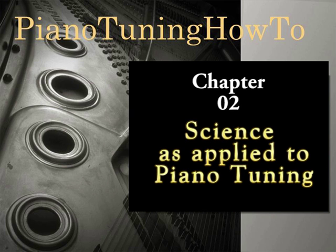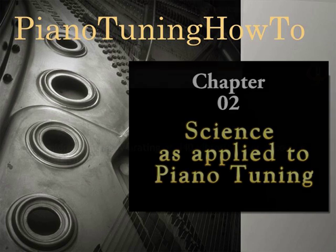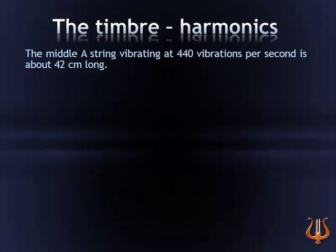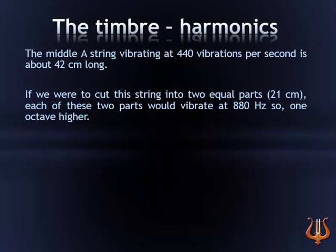Chapter 2: Science as Applied to Piano Tuning. The timbre and harmonics. The middle A string vibrating at 440 vibrations per second is about 42 cm long. If we were to cut the string into two equal parts of 21 cm, each of these two parts would vibrate at 880 Hz — that is, one octave higher.